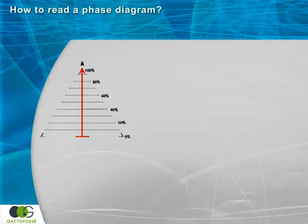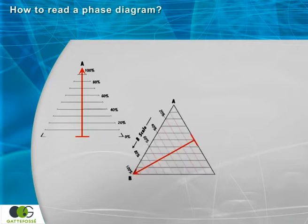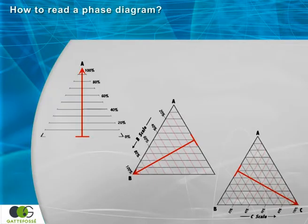The grid lines each represent a 10% increase in the amount of the relative component. The percentage of component B ranges from 0, when the starting point is on the right-hand side of the triangle, to 100 when at the vertex B. Remember that the three components must total 100%.